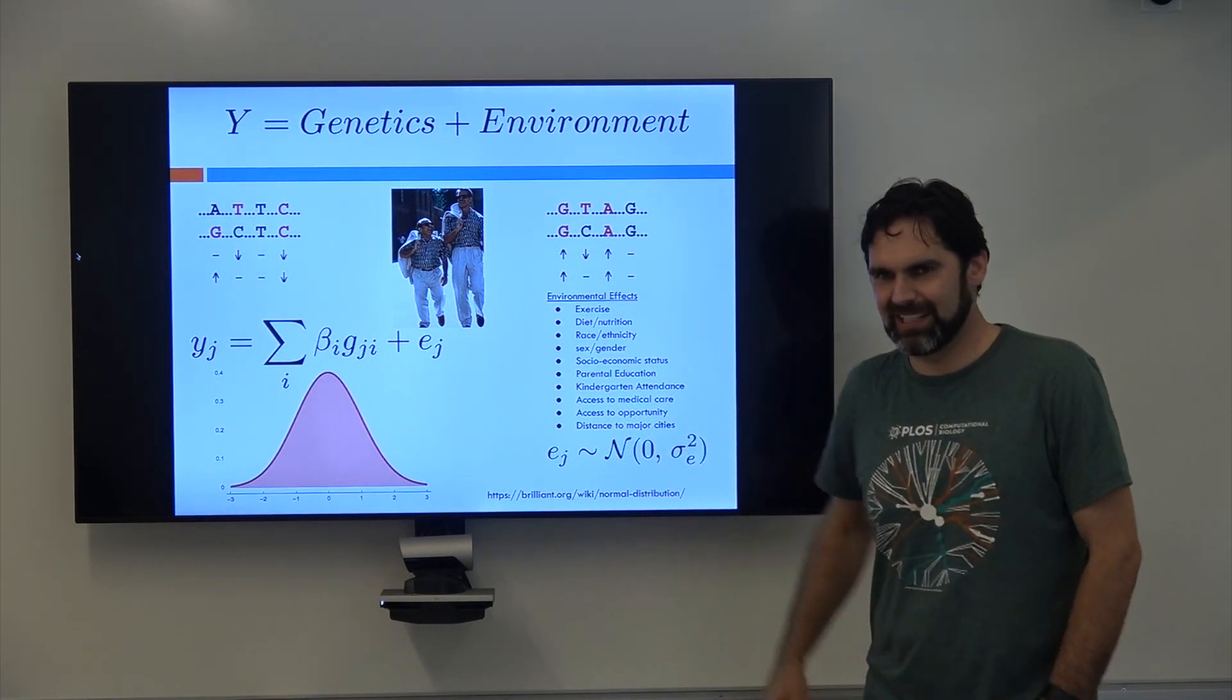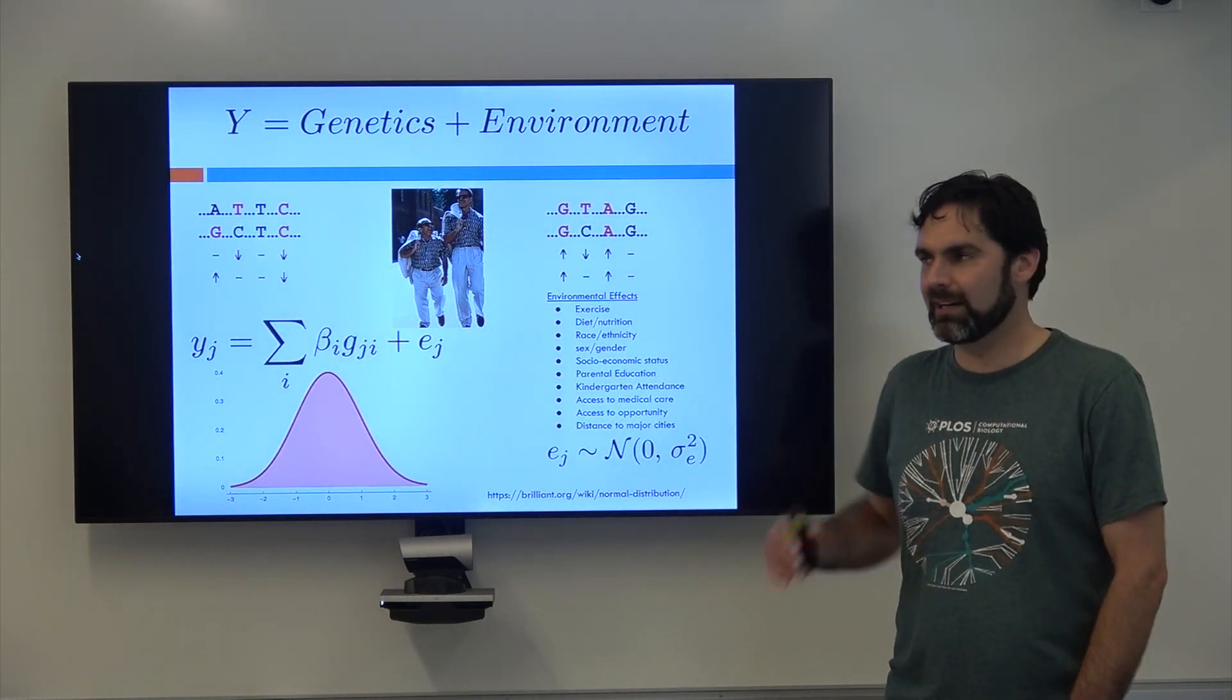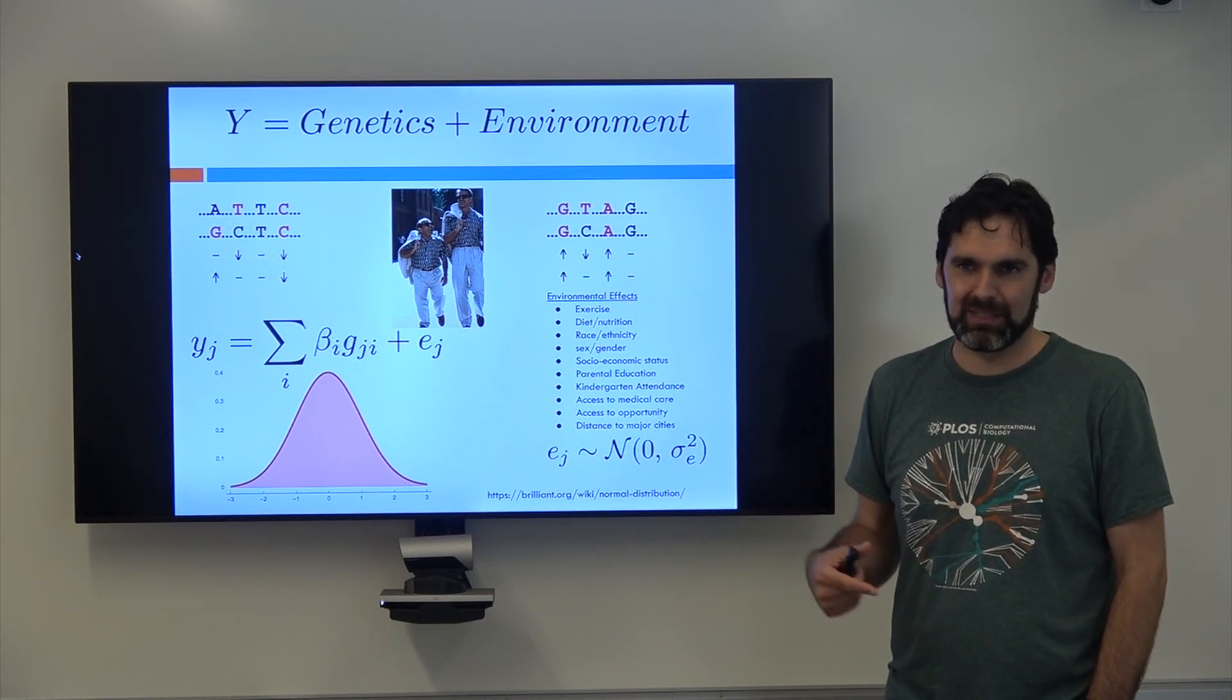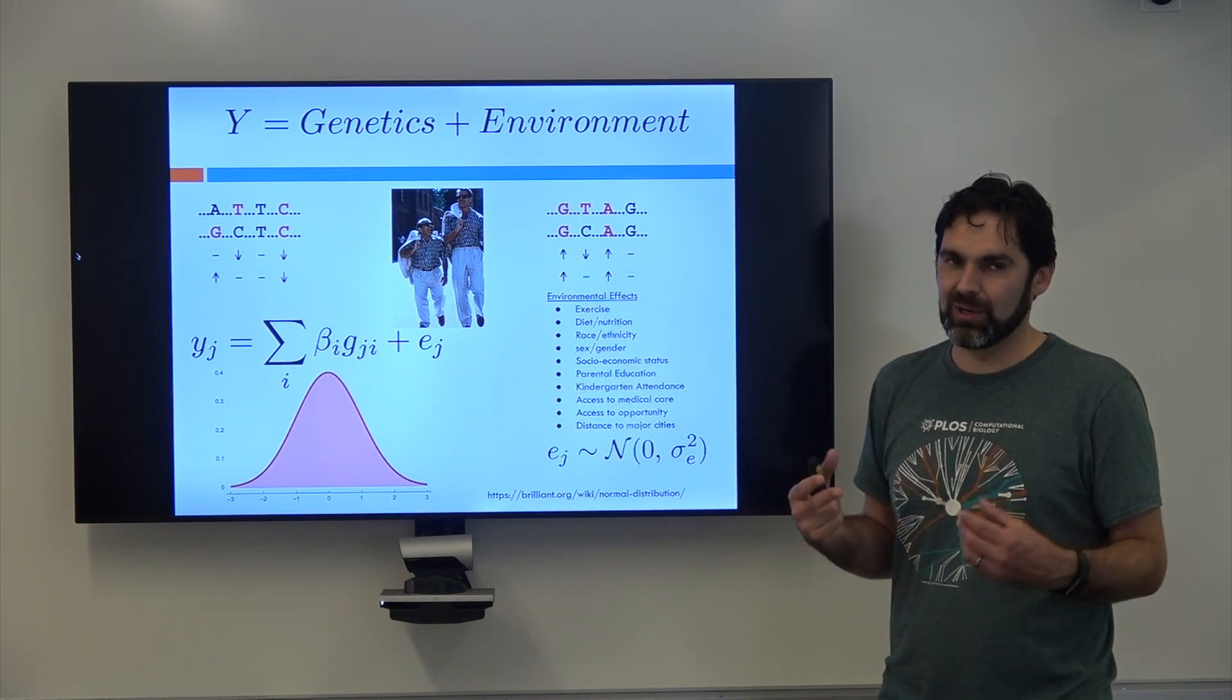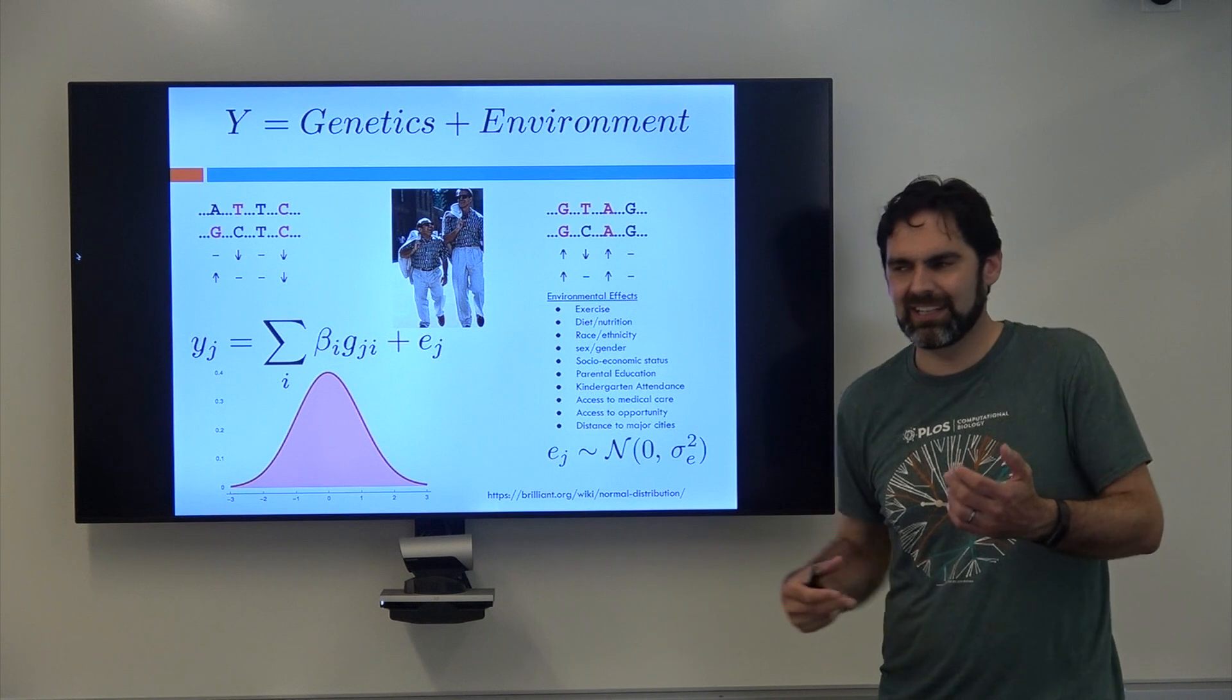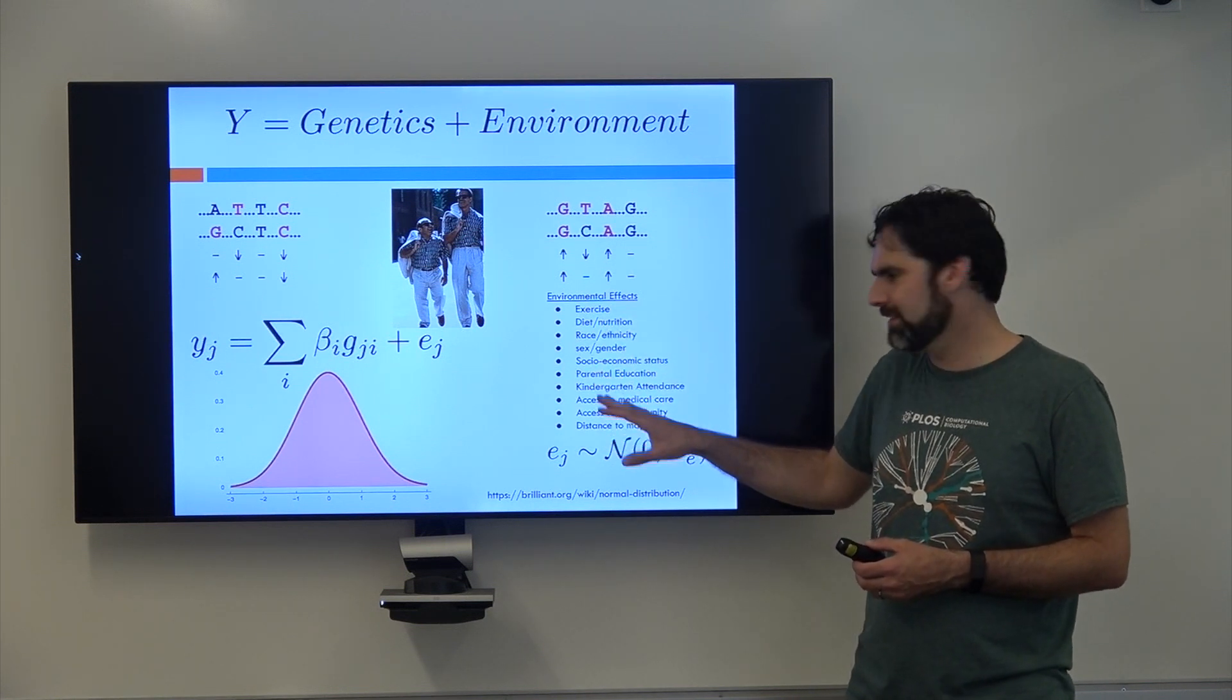And so basically we kind of forget about all of those unless we're really really interested in them. Sometimes people will go out and explicitly measure all of these things and it's great when they do it. There's a few we always measure like you always take a person's sex and height and BMI and age. Like these are ones that we know have a really strong effect on a lot of people's phenotypes, especially like age. Yeah, you get taller as you get older usually, hopefully. And also you can accumulate mutations, things happen.